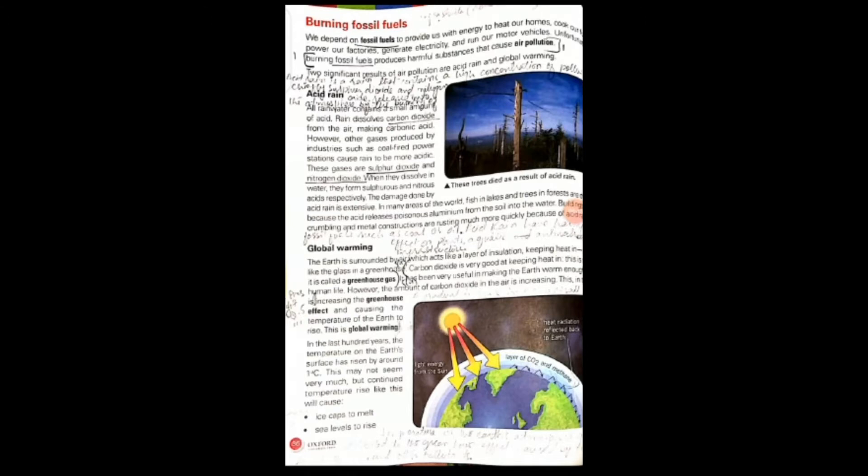That is called air pollution. The main harmful effect of burning fossil fuels is air pollution. Because of this air pollution, two types of things are happening: acid rain and global warming.